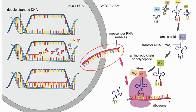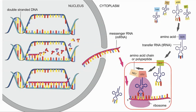The RNA, called messenger RNA, detaches from the DNA, leaves the nucleus, and migrates to the ribosome. The ribosome is the machinery which assembles the protein by reading the sequence of bases in the RNA in a process known as translation.